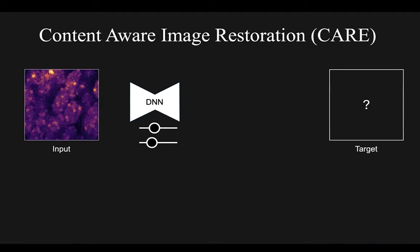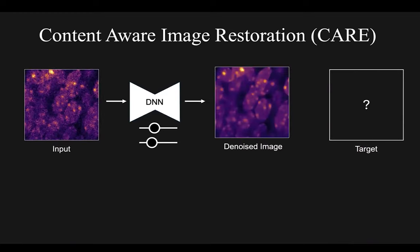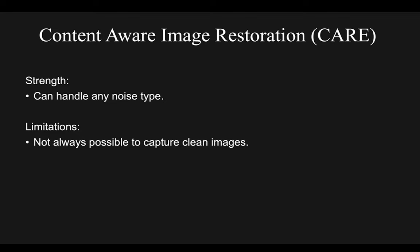With enough practice, the network can take an image it's never seen before as input — one we don't have a clean ground truth for — and produce a denoised image as output. The main strength of CARE is that it can handle any noise type, as long as you have those paired images. The limitations are that it's not always possible to capture a clean target image, as biological samples are often too delicate. It's also challenging to register noisy and clean images together since there can be no shifting, and live moving samples must be fixed between exposures.